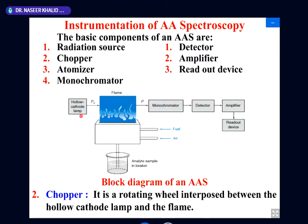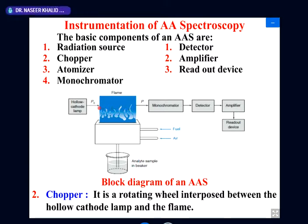This is the hollow cathode lamp. It is emitting radiation, passing through the system and giving us radiation with power P0. In the flame, elements are present and they are absorbing this radiation. After absorption, the intensity decreases from P0 to P — that is the transmission.